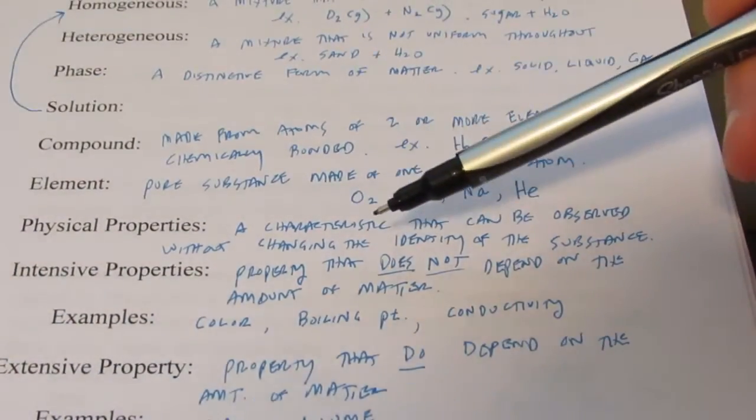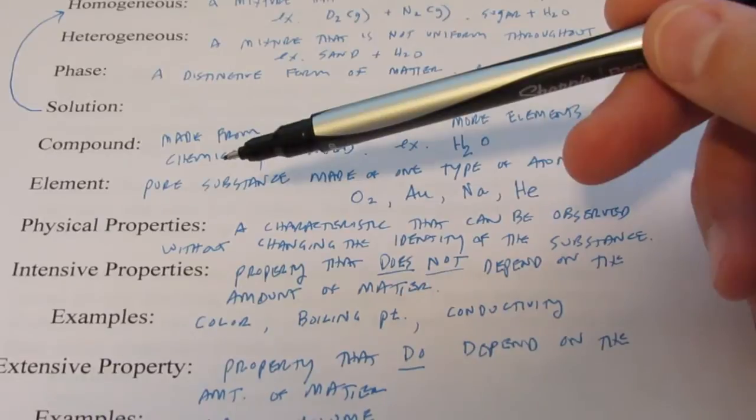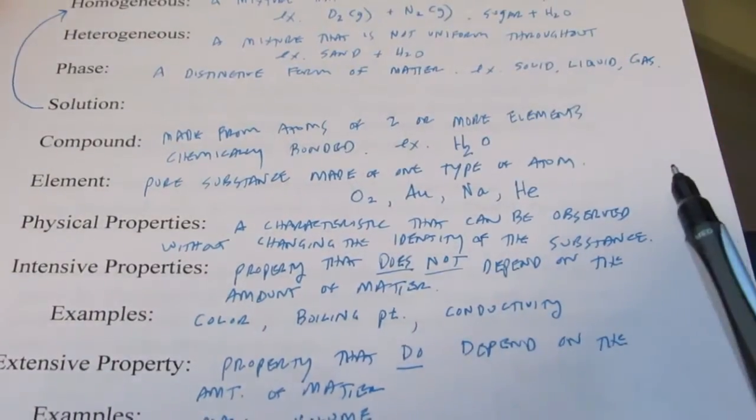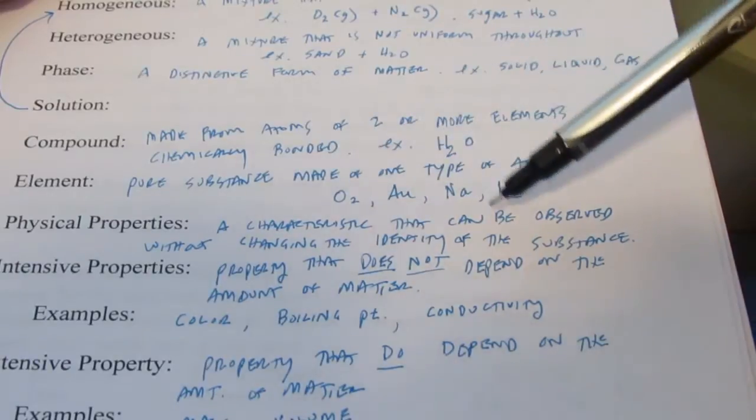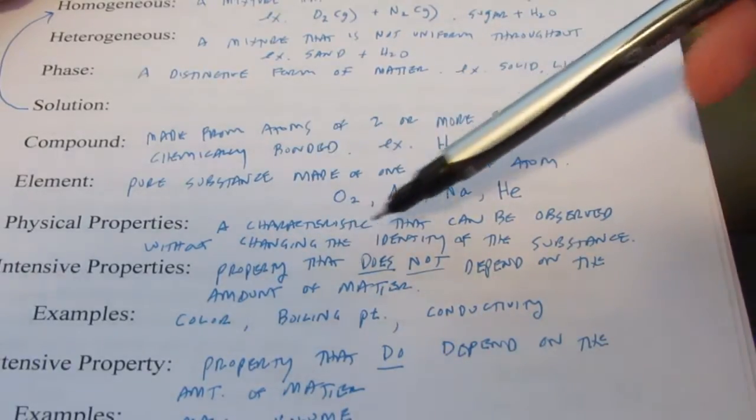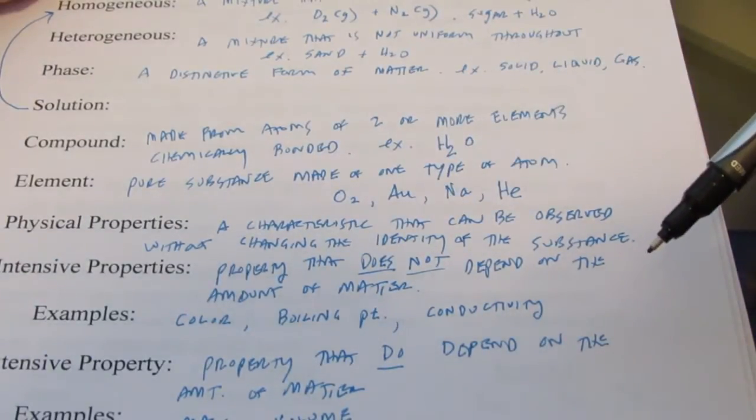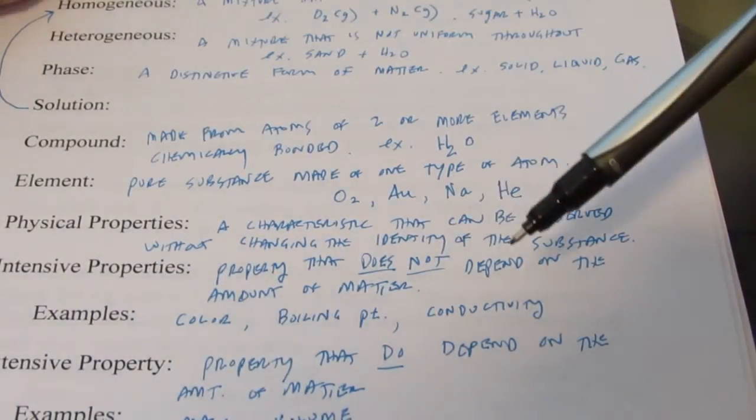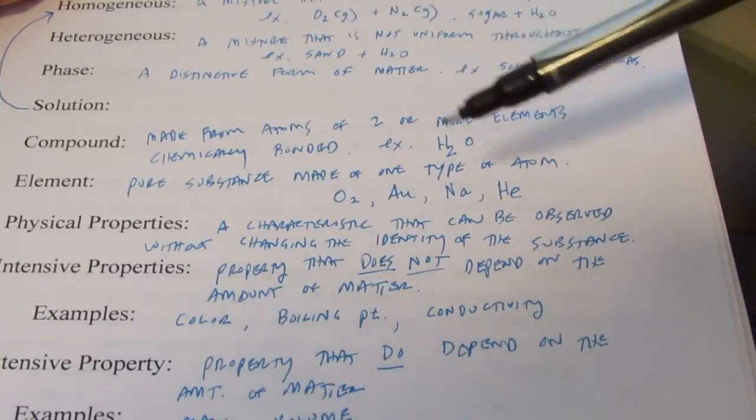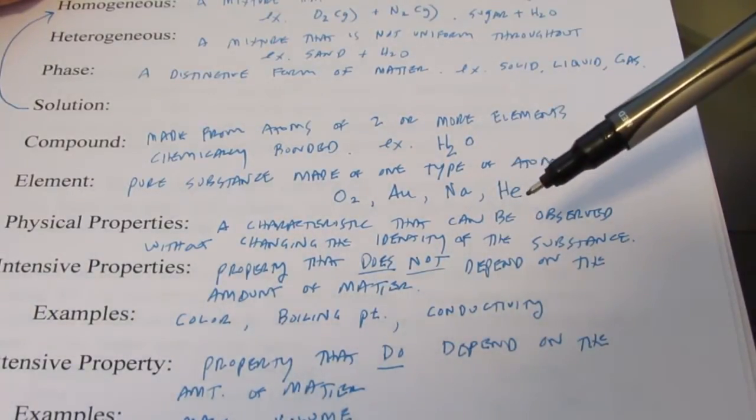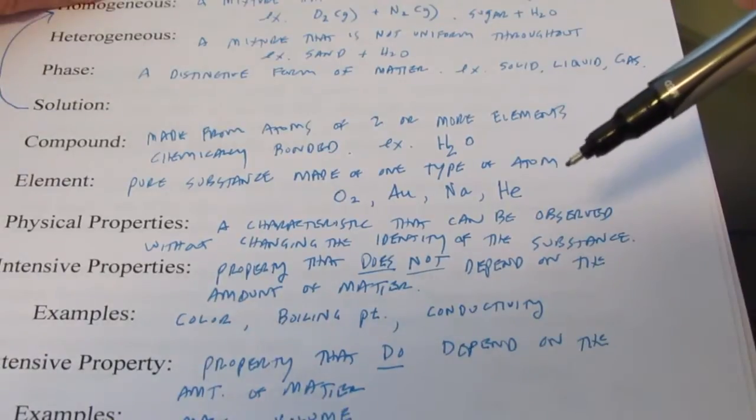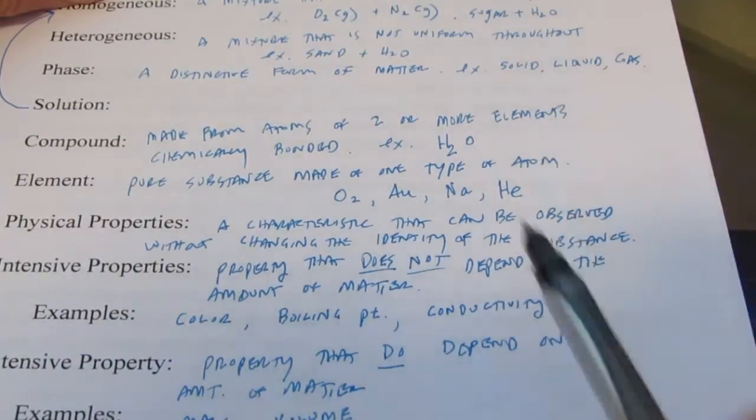So physical properties, we'll see a characteristic that can be observed without changing the chemical identity of the substance. And we gave some examples. For instance, we said density. In fact, we did a lab on density. We found the density of several different objects. Did we change them chemically as we determined the density? Of course not. So density would be a physical property.